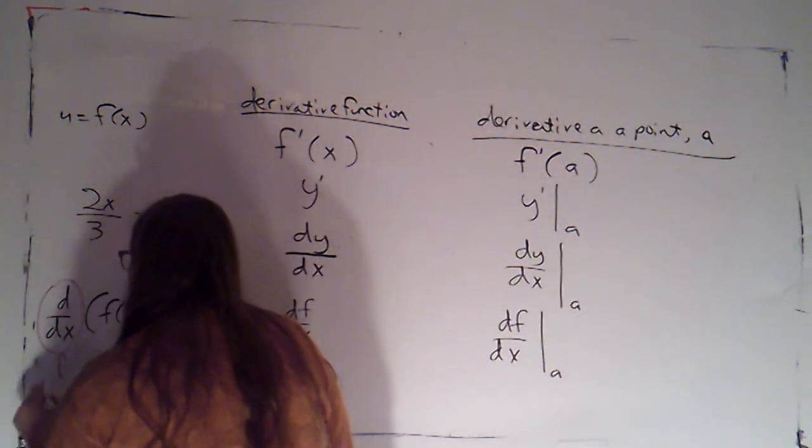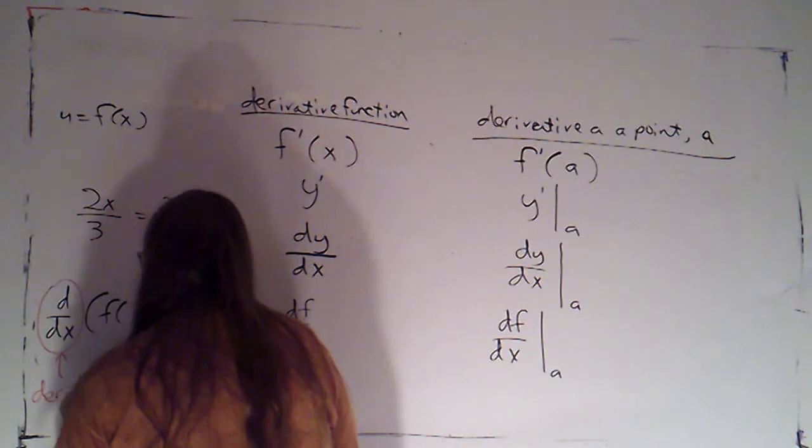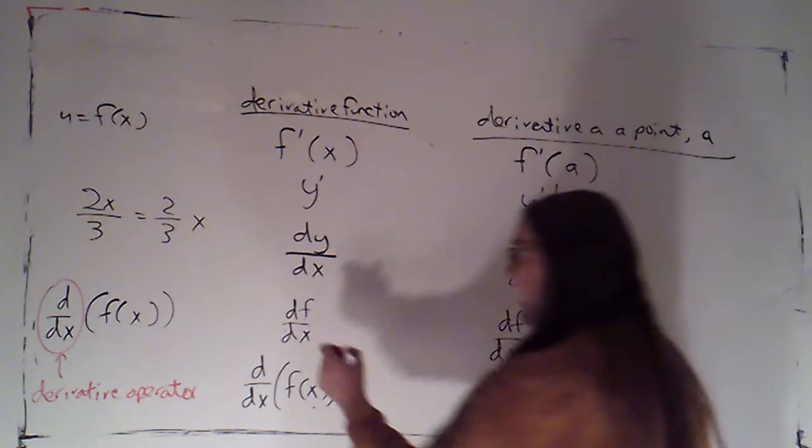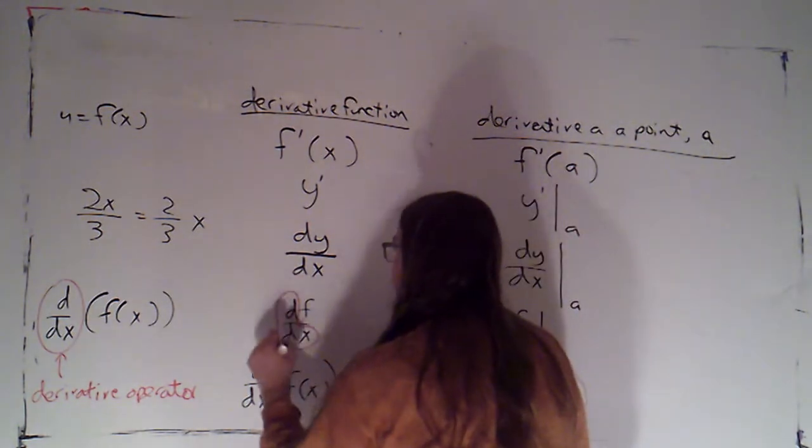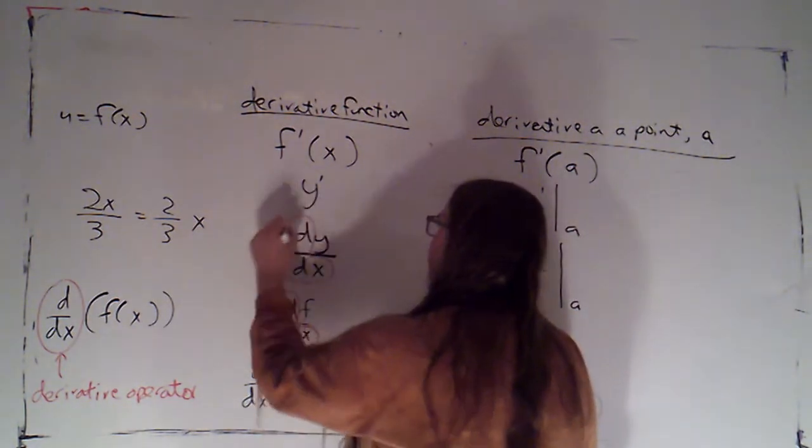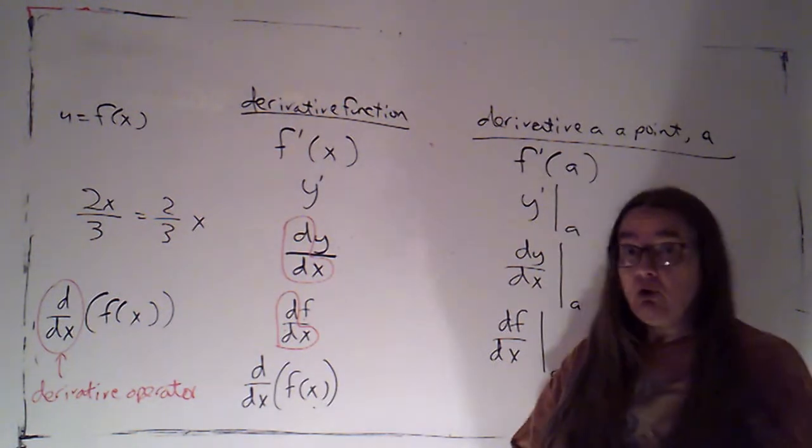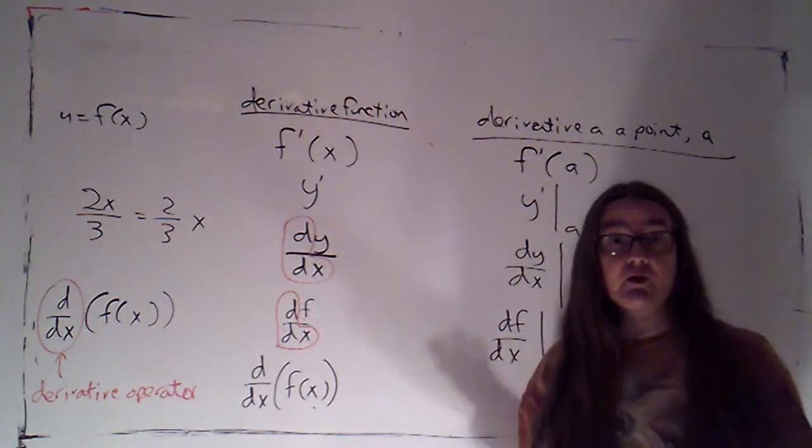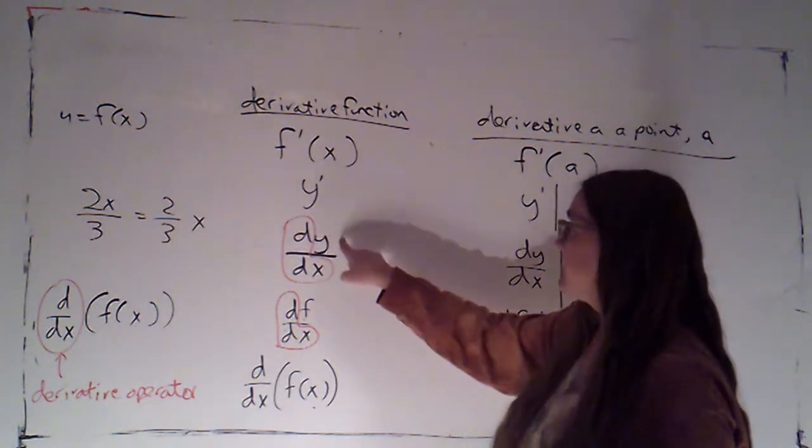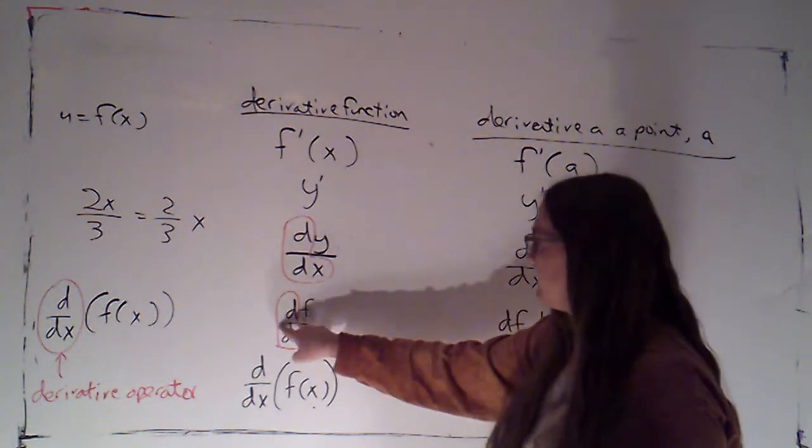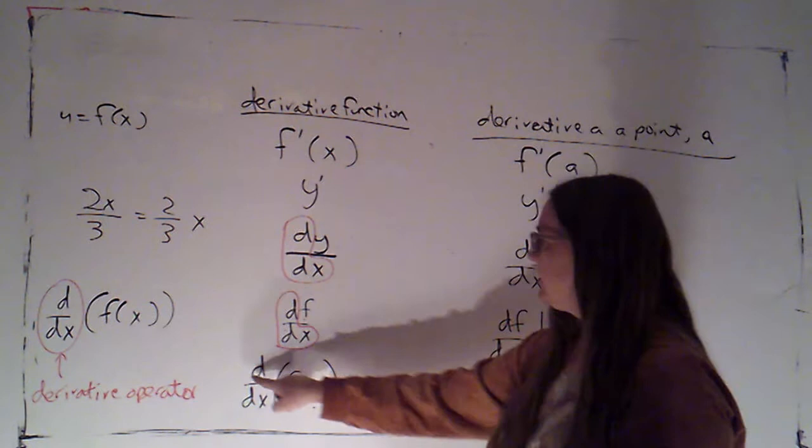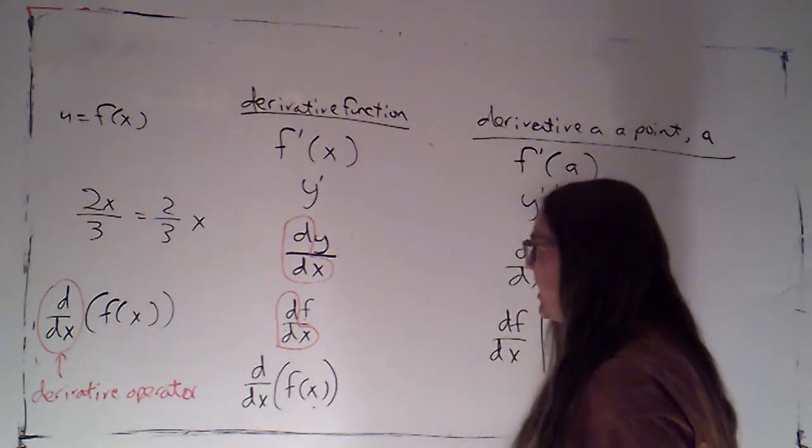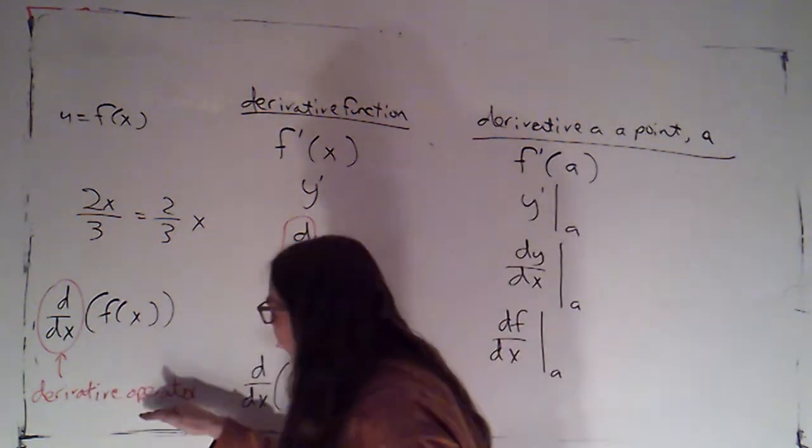that's what we call the derivative operator. And it's embedded. It's part of this symbol and it's part of this symbol. The rule is always whatever comes after the d on top is what you're taking the derivative of. So here I'm taking the derivative of y. Here I'm taking the derivative of f. Here I'm taking the derivative of f of x.